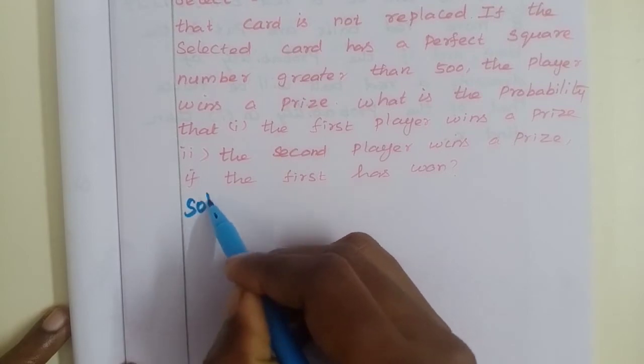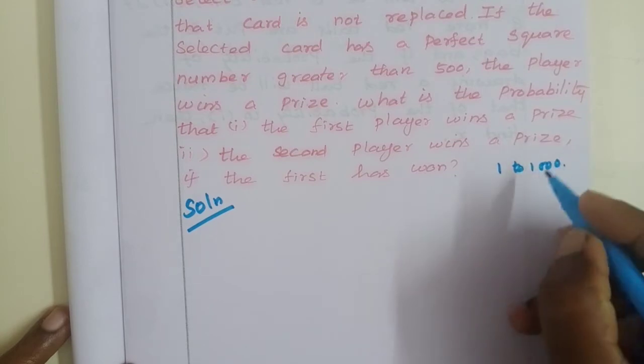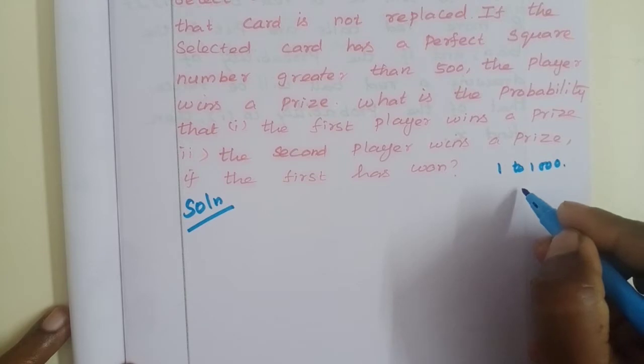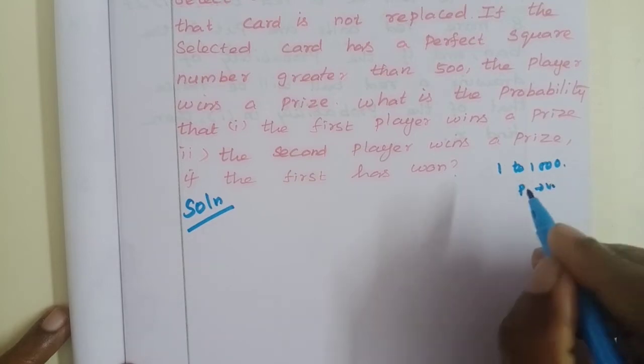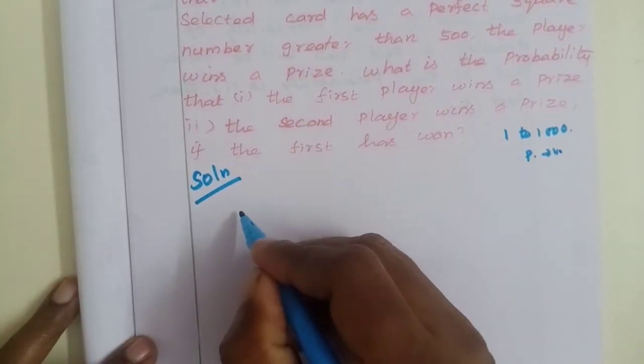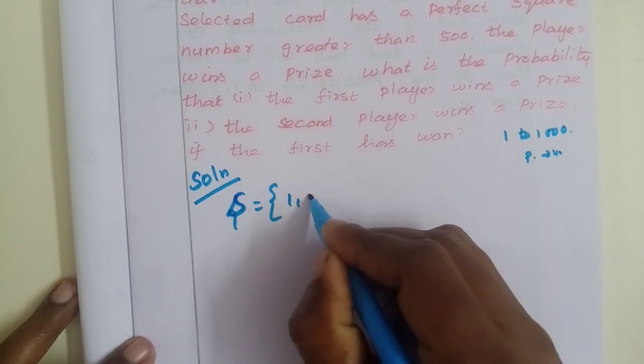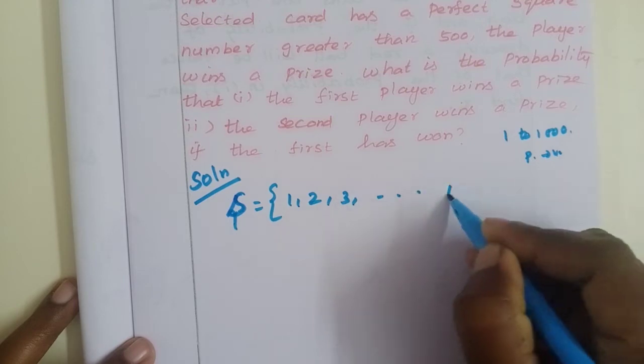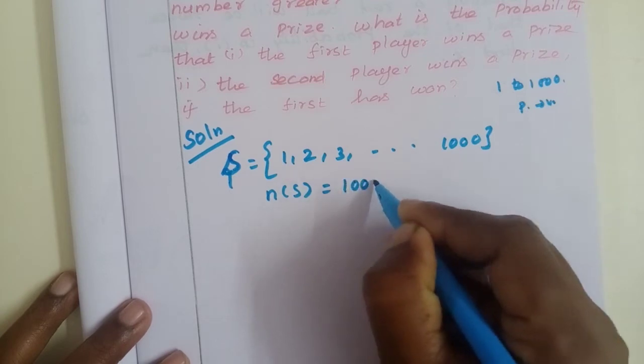So, the chords are numbered 1 to 1000. The condition is the number must be above 500 and be a perfect square. That is the winning number. The chord is not replaced.